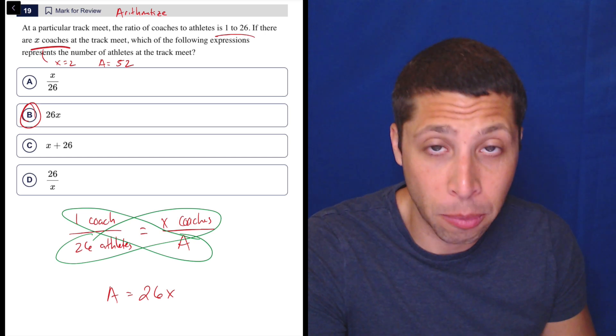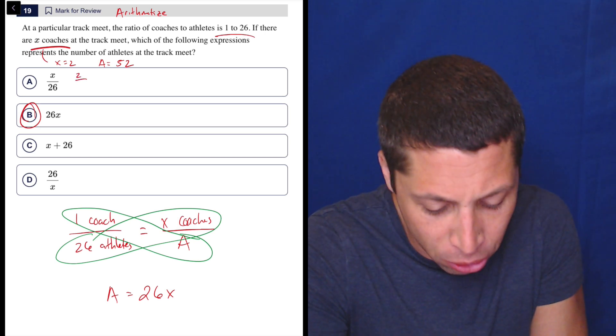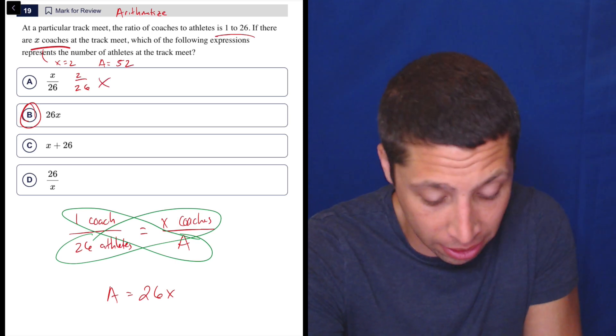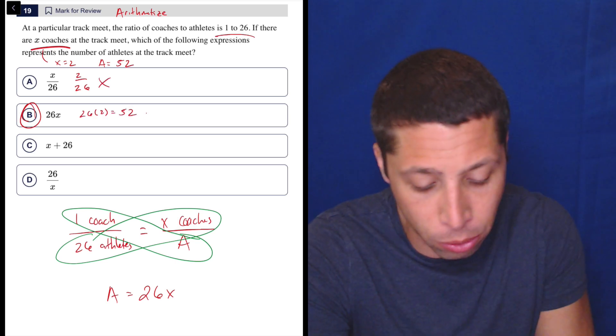Then you could just plug those numbers basically into these equations. So if X is two, I want to get 52 out. But two over 26, well, that's a decimal. That's not going to work. 26 times two. Well, that's what we just did in our head to get 52. So that works.